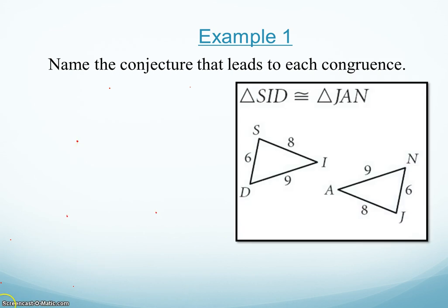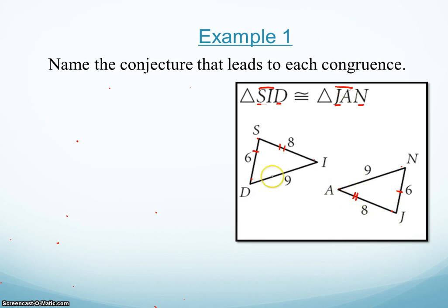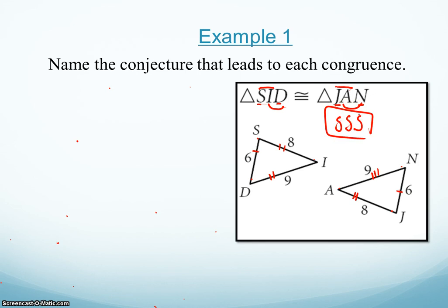So the next example says triangle SID is congruent to triangle JAN. By looking at the triangles, how do we know those two are congruent — what shortcut are we going to use? Well, SD is six, and NJ is also six, so those match up. SI is eight, which corresponds to JA, and JA is also eight. And the last one is nine, which is ID — that corresponds to AN, and AN is also nine. So I have three sides corresponding to three sides: side-side-side is the triangle congruence that tells me these two triangles are congruent.